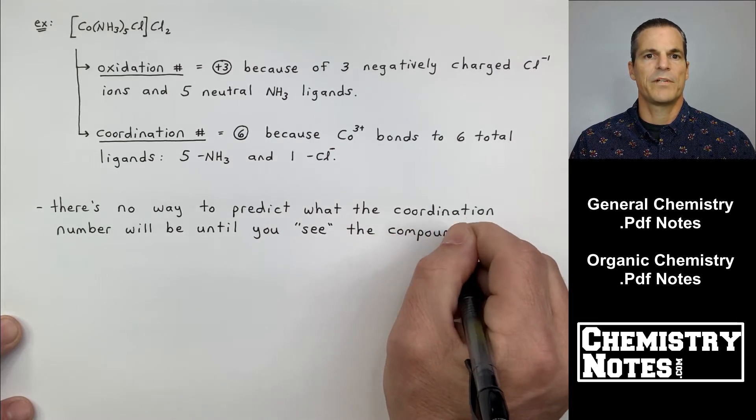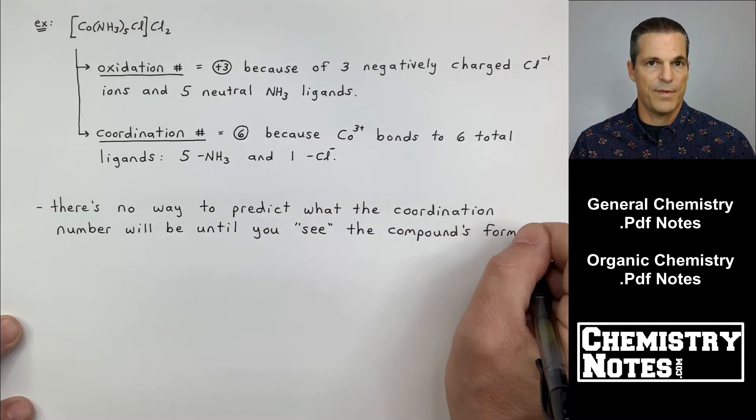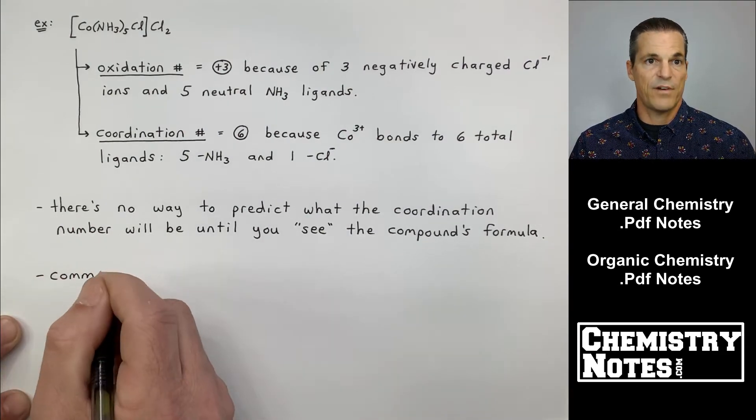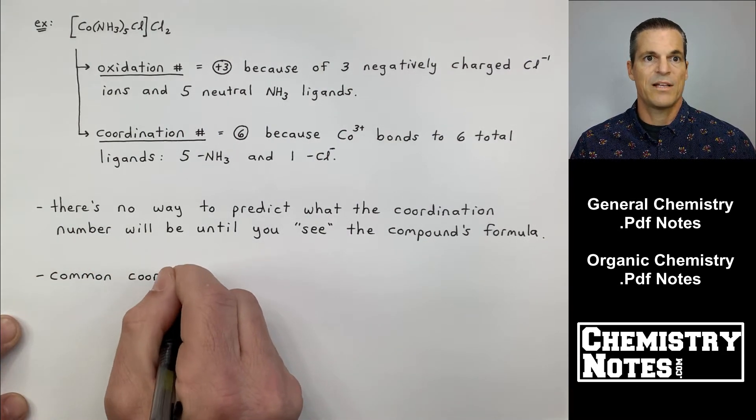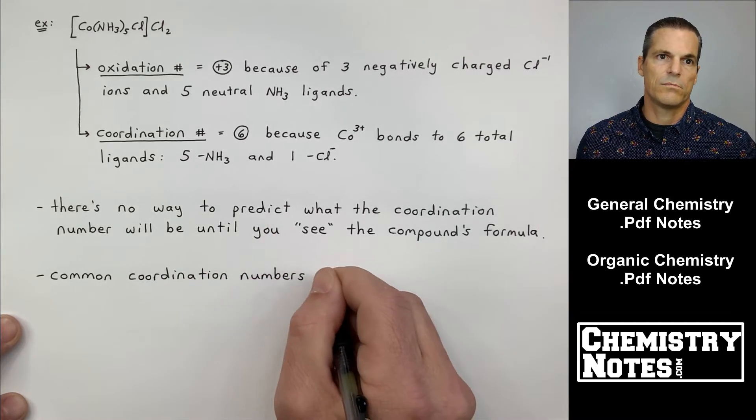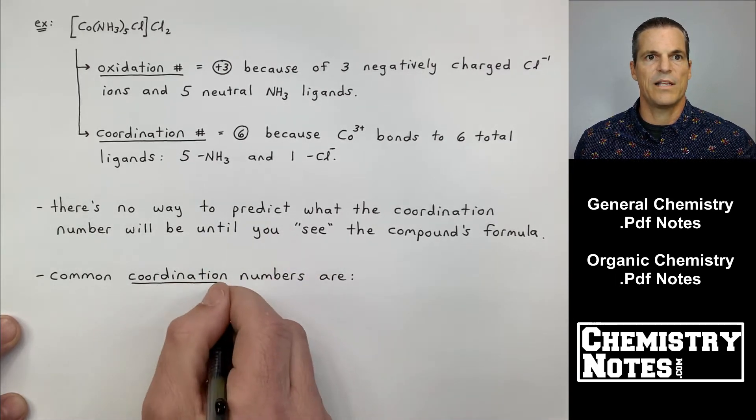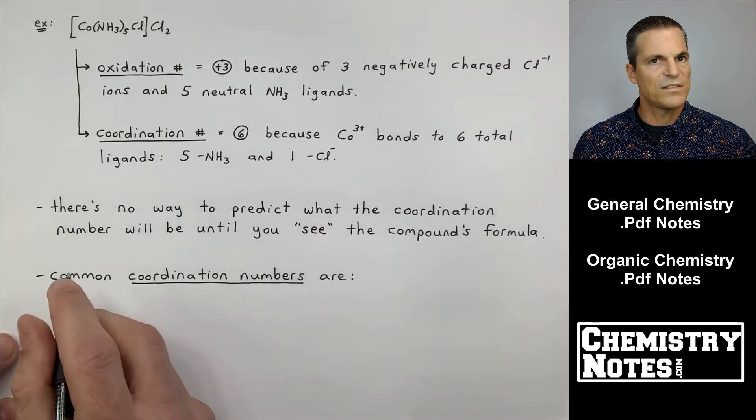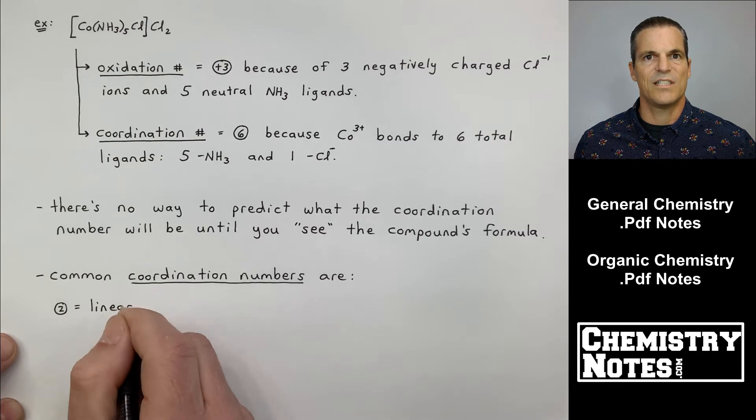Now, there's no way to predict what the coordination number is going to be until you see the compound's formula. At the very top of the page where it says example, that is the compound's formula. When I look at that, I see, oh, five NH3 ligands, one Cl ligands. Only one Cl ligand. I realize there's three Cls in the compound.